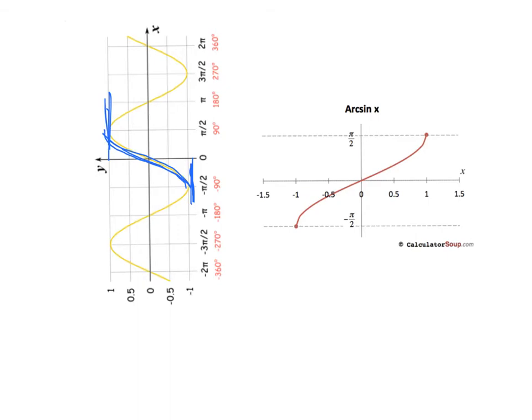Notice that our domain now is from negative 1 to positive 1, nothing more. And our range, our y value options, range from negative pi over 2 all the way to pi over 2.